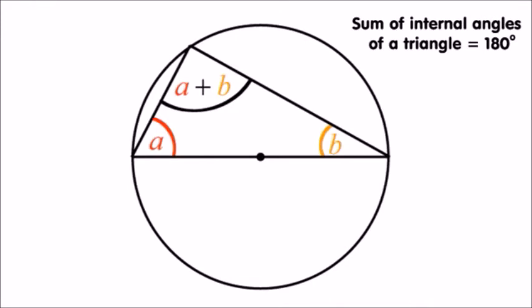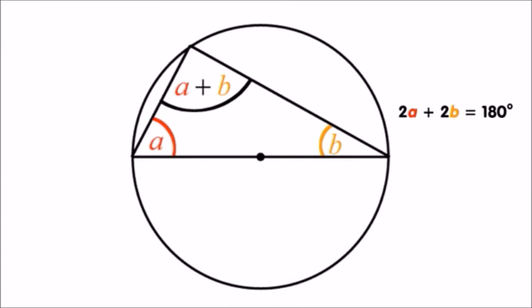we notice that the three angles in the big triangle are a, b, and a plus b. We can set up an equation: 2a plus 2b equals 180 degrees.